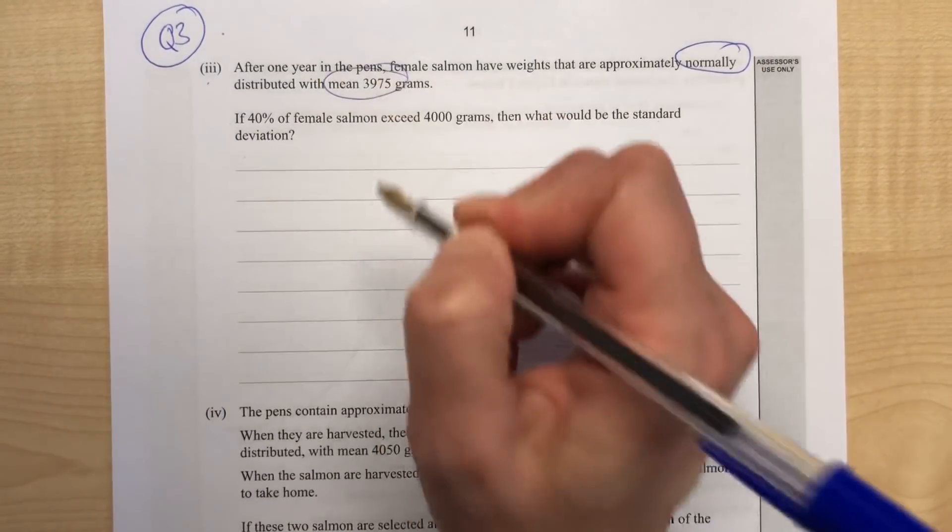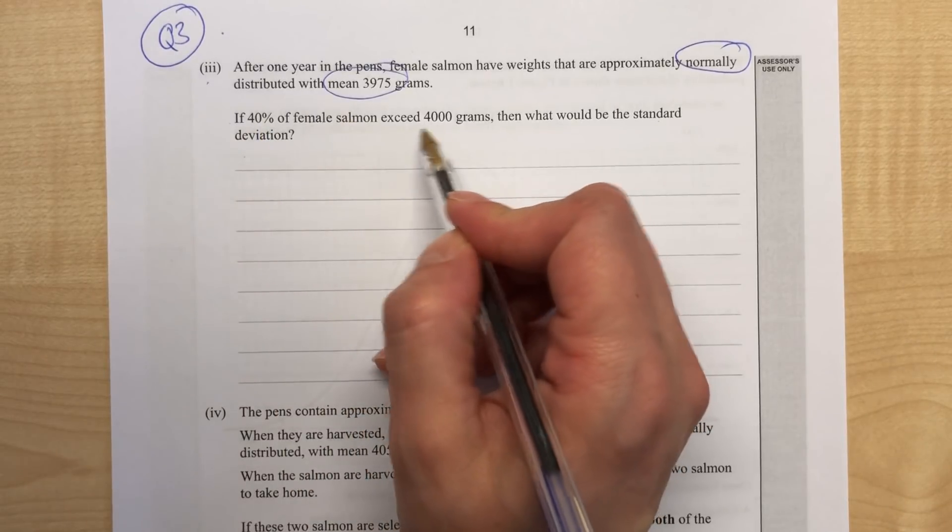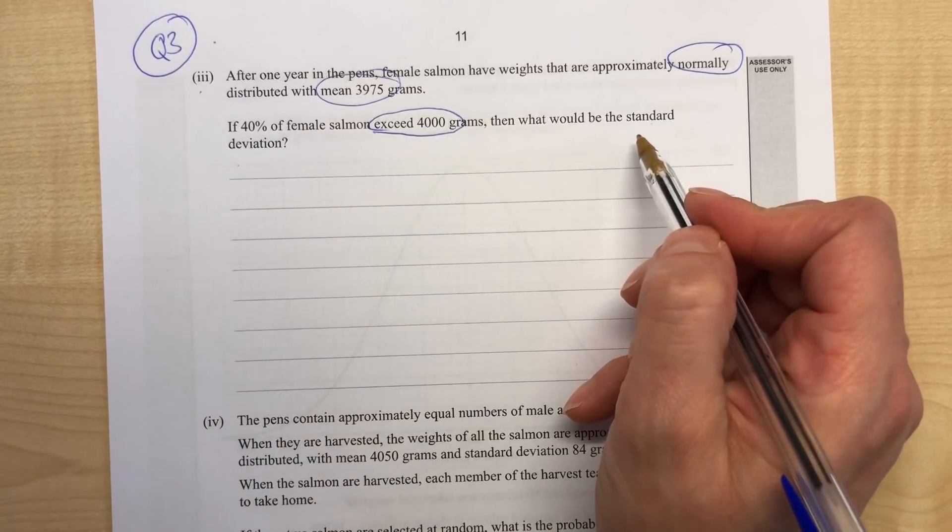After one year in the pens, female salmons have weights that are approximately normally distributed. I'm circling the important parts - mean of 3975. 40% of the salmon exceeded 4000. We've got to work out the standard deviation.